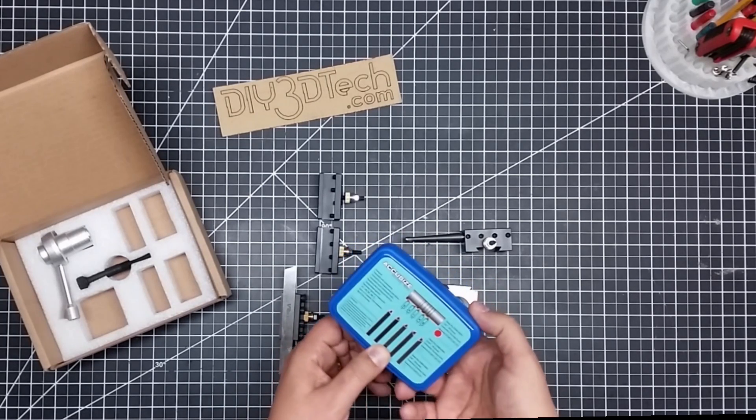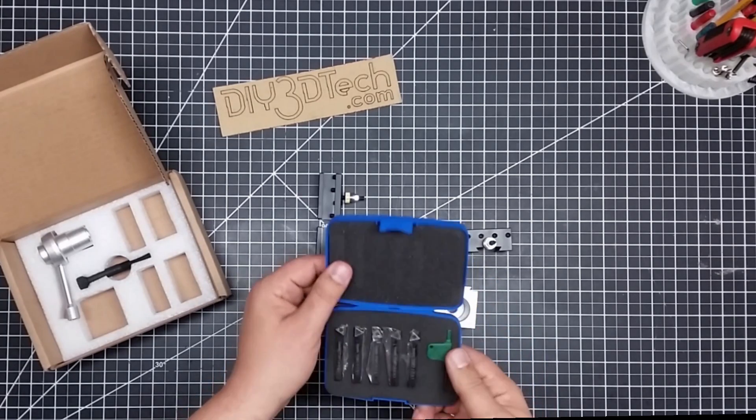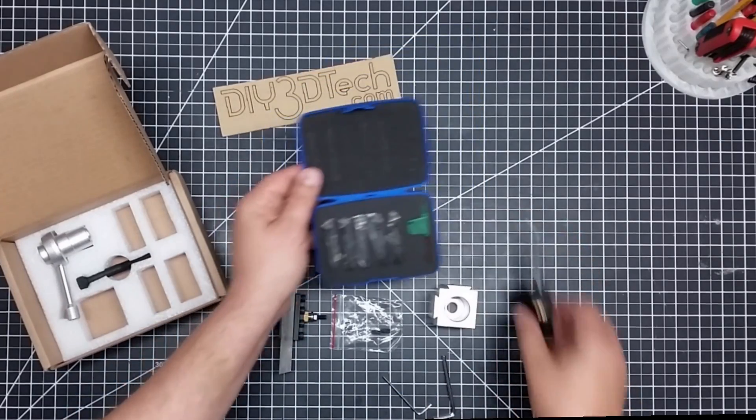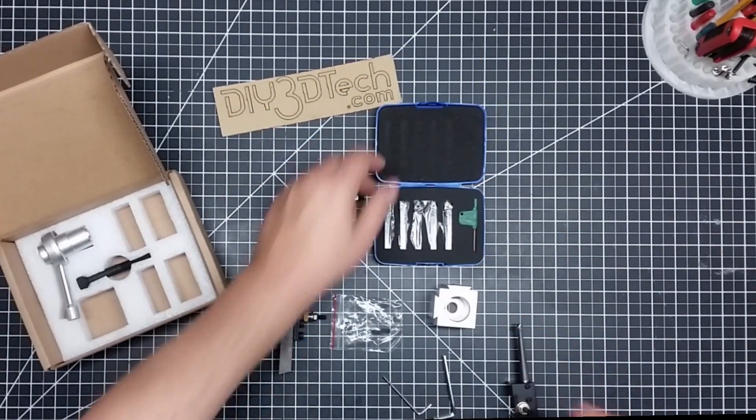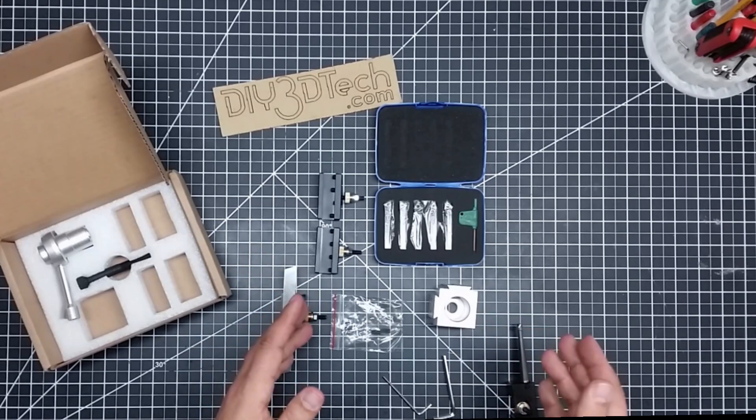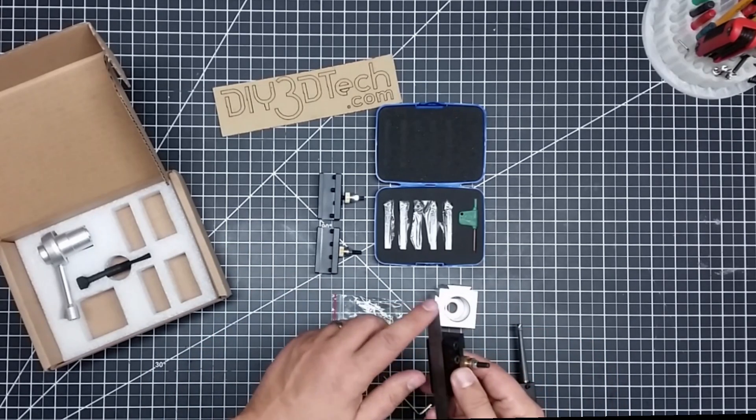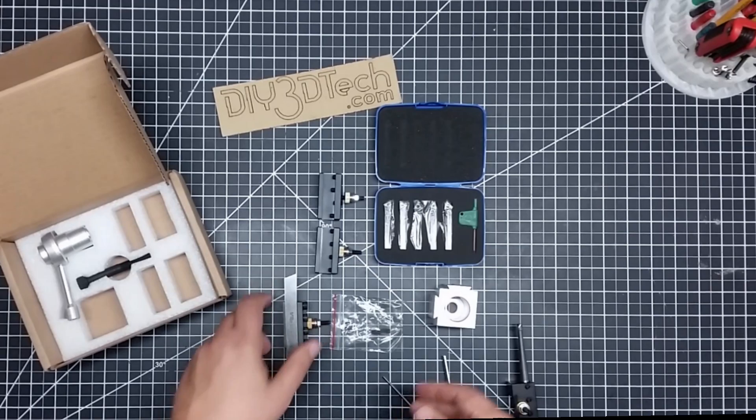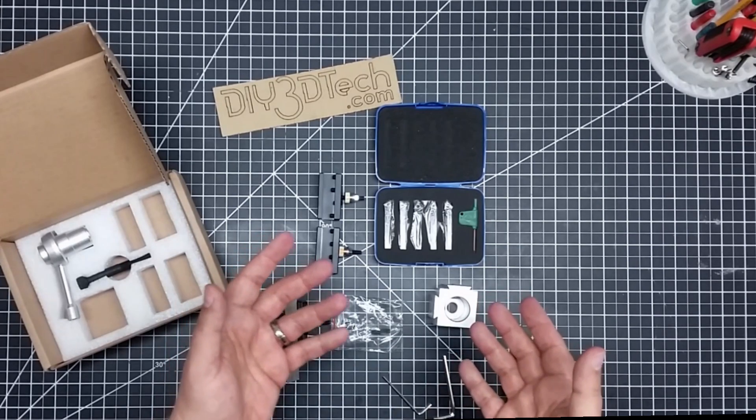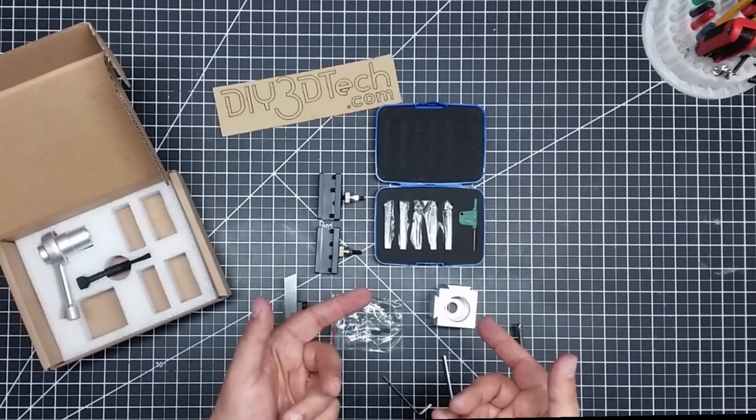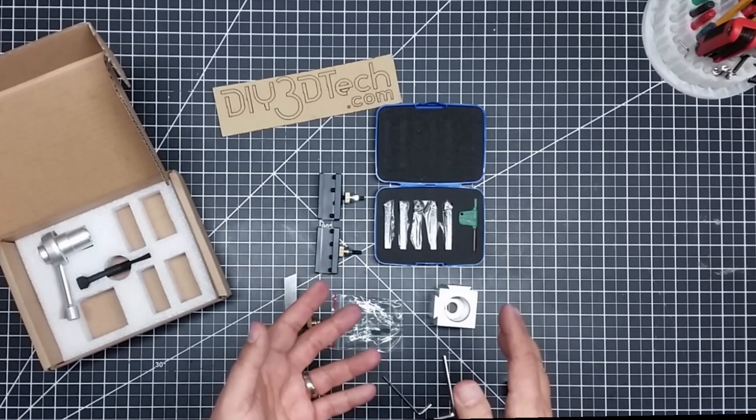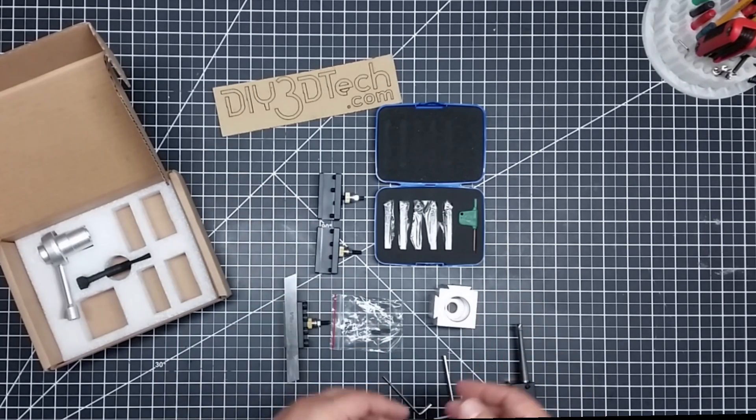These are carbide cutters. If you're rather new to machining, you have two basic styles of cutters. High-speed steel, which technically that's what this is, and then carbide. Both have their uses. I like the carbide quite a bit. They've gotten a lot cheaper over time.